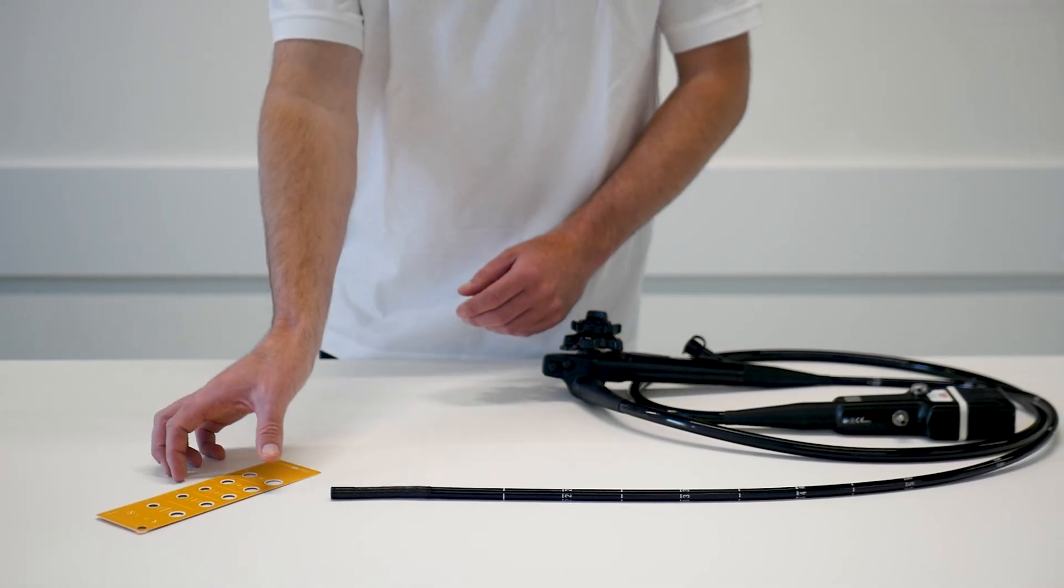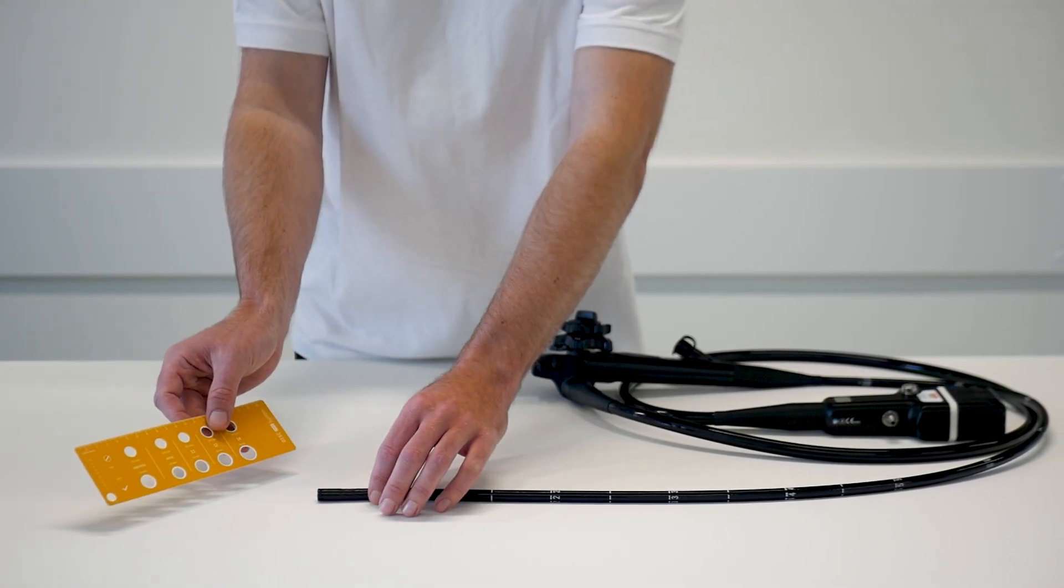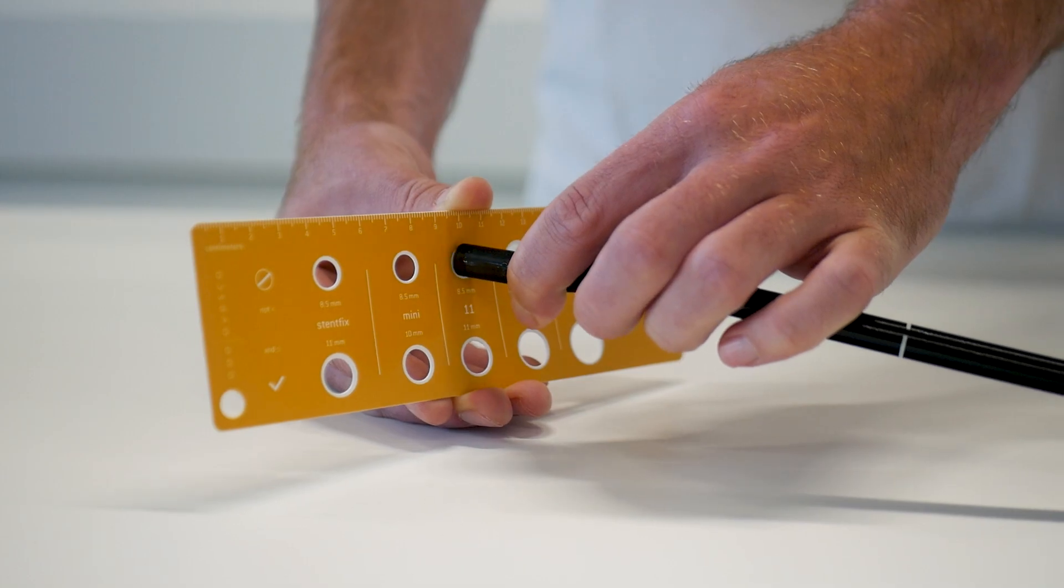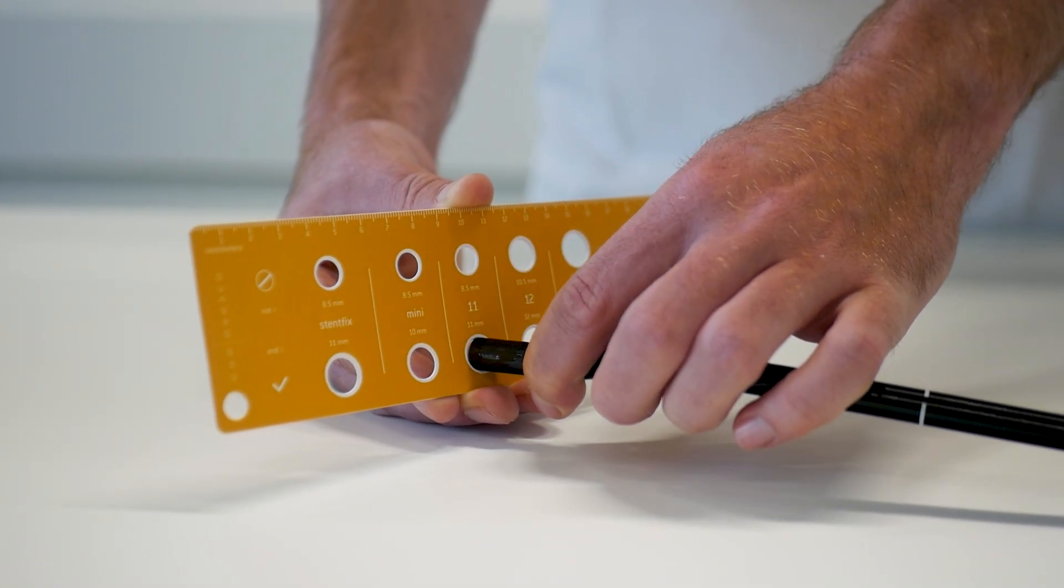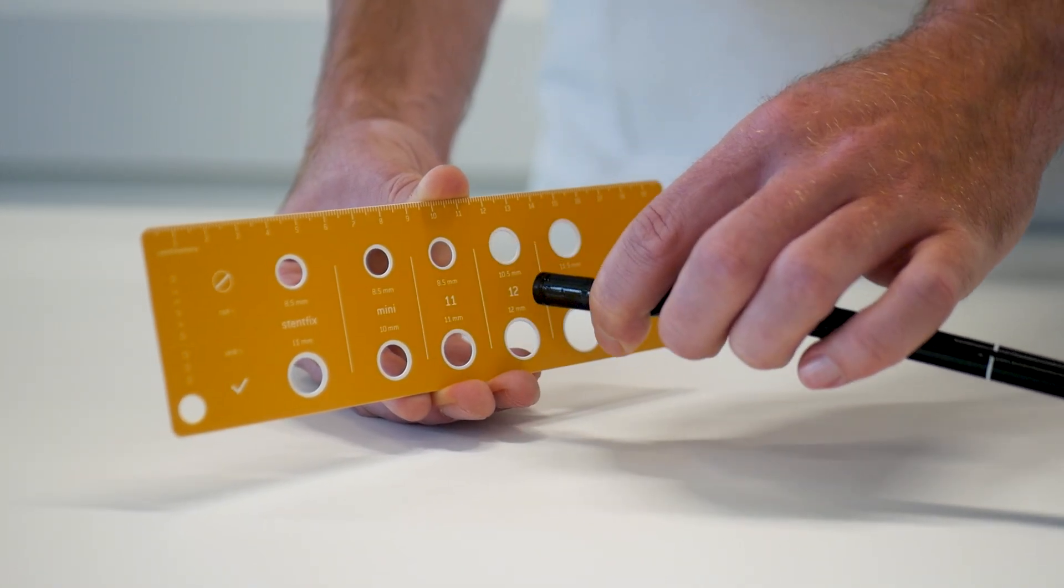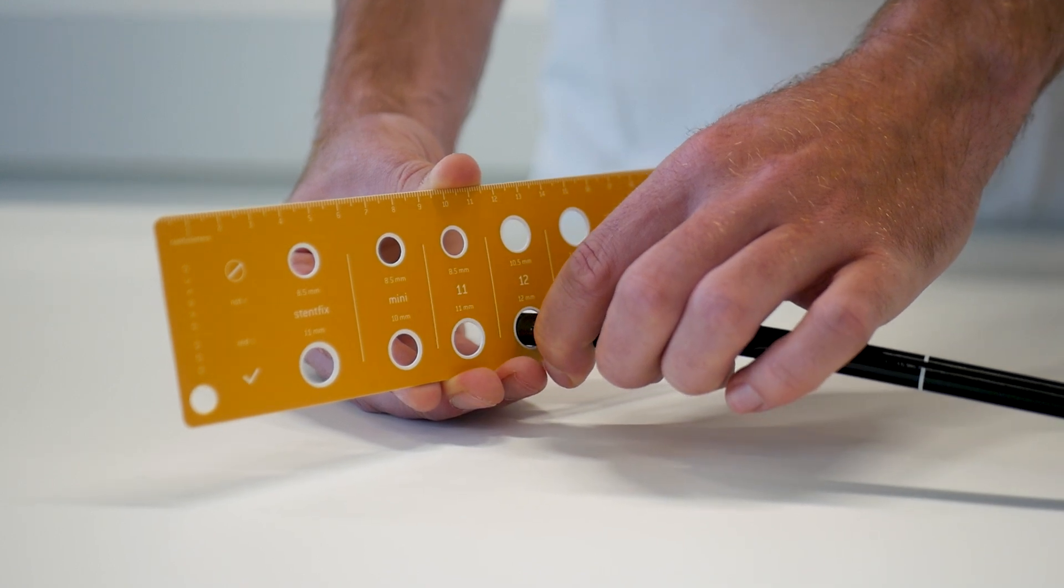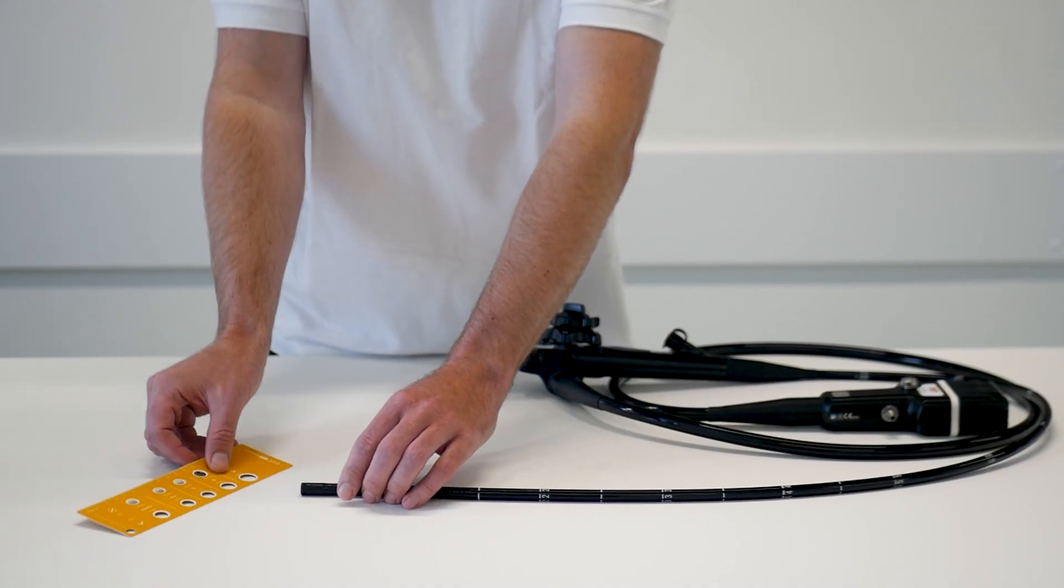Before use, check the compatibility of the endoscope and the application cap using the scope check. The endoscope is compatible if it is too large for the upper opening but fits through the lower opening. This step is particularly important as endoscopes often deviate from their specifications.